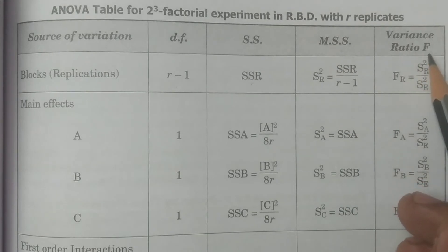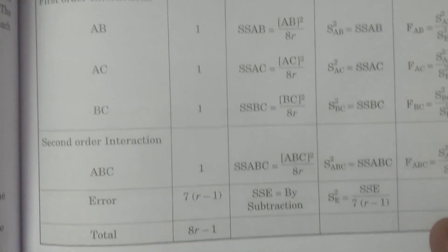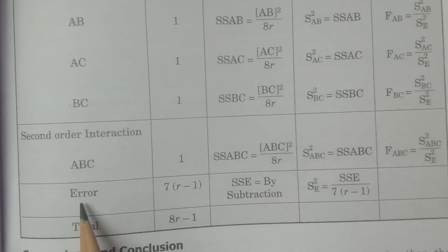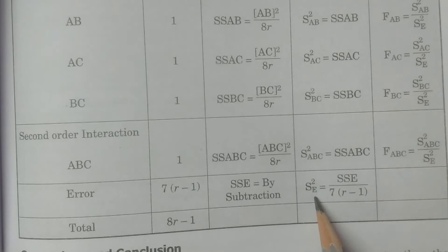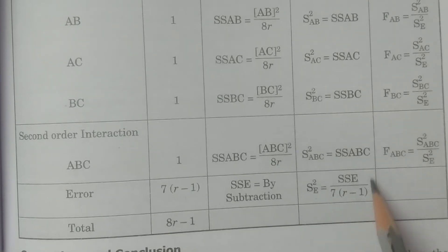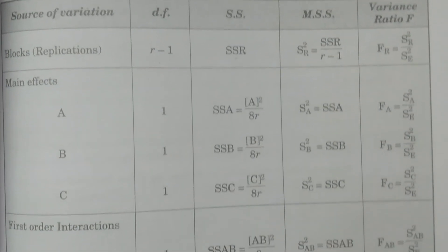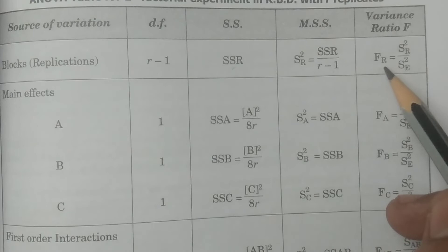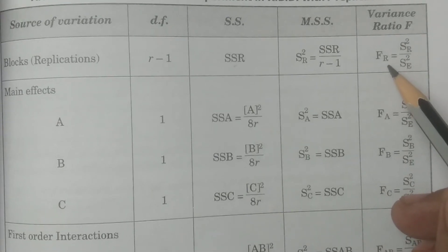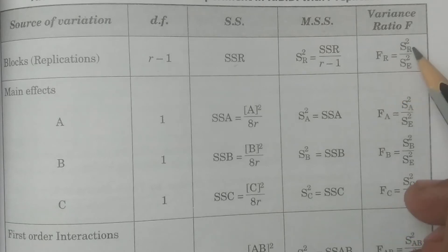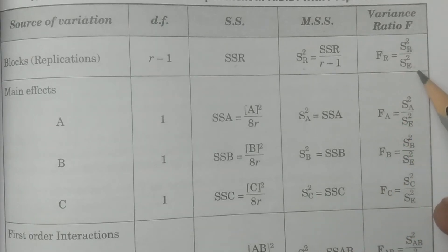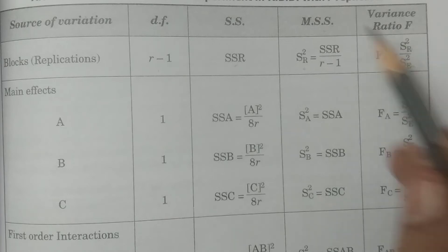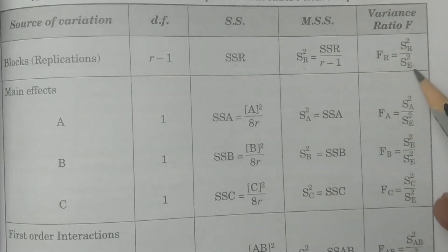The error component has degrees of freedom 7(R−1), and sum of squares SSE is obtained by subtraction. The mean sum of squares for error is S²E = SSE / [7(R−1)]. This S²E is used as the denominator in the calculation of any F ratio.